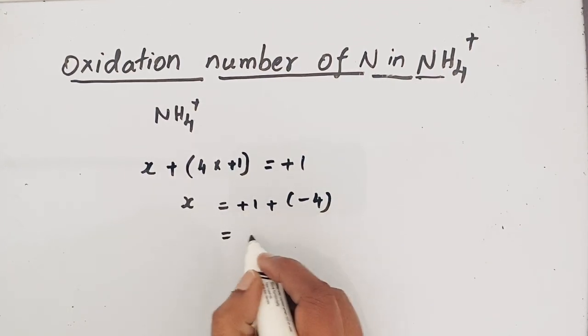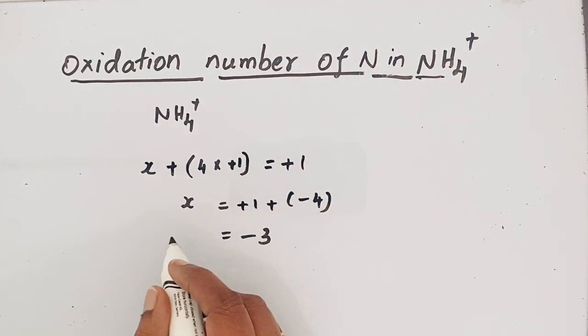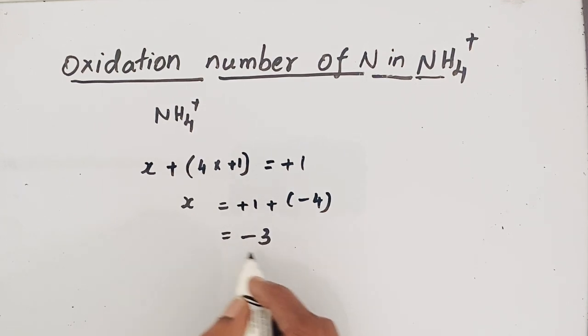So we will get -3. Therefore, the oxidation number of nitrogen in NH4+ ion is -3.